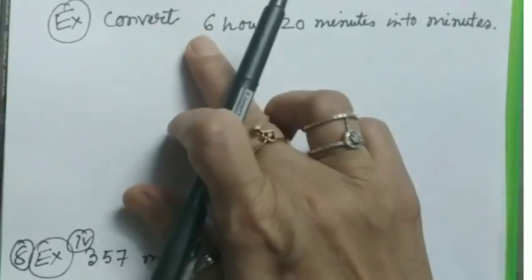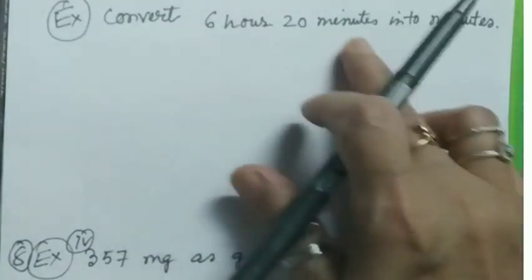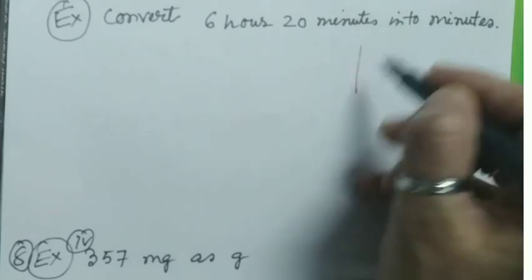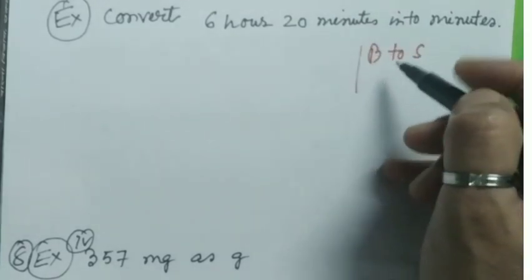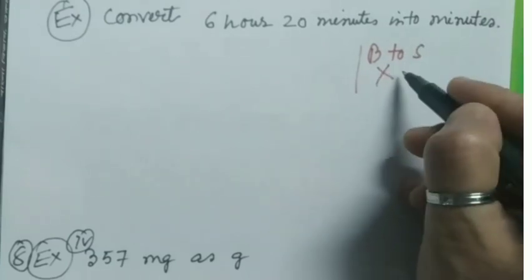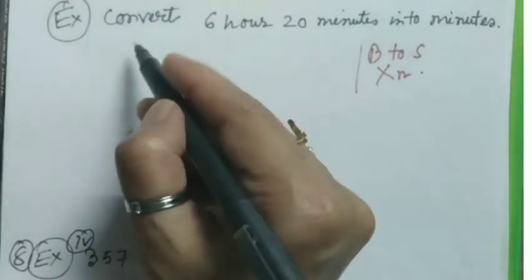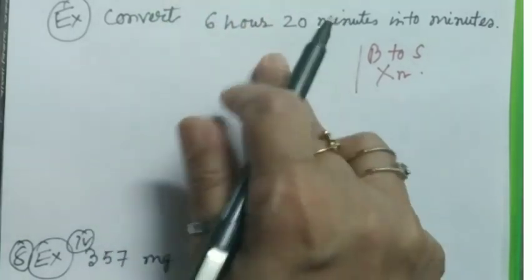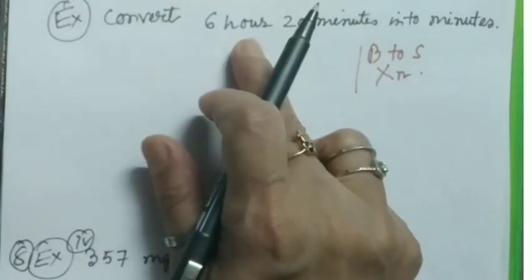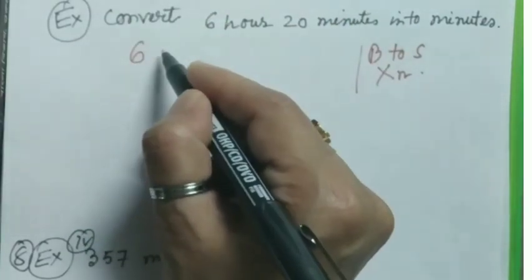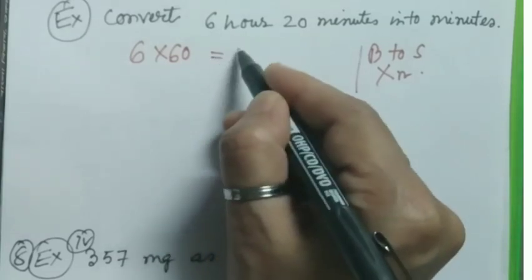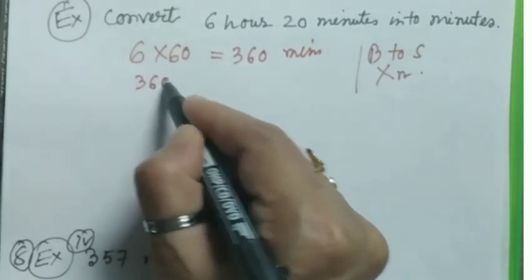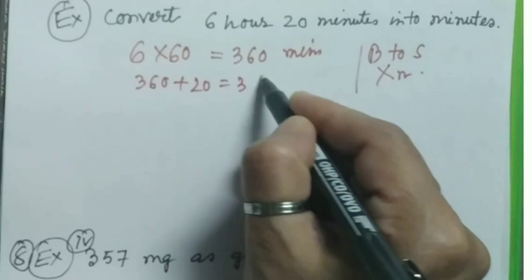This question is convert 6 hours 20 minutes into minutes. Here we are converting big to small, and the minutes part will keep as it is. Big to small - what to do now? Exactly, multiplication. Therefore I'm keeping 20 minutes as it is, I'm converting this 6 hours. The relation is: one hour equals 60 minutes. So we will multiply 6 into 60. This equals 360 minutes. Our answer will be 360 plus 20 equals 380 minutes.